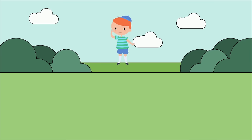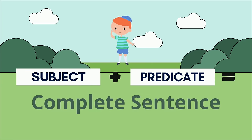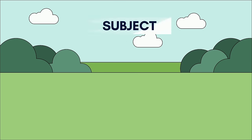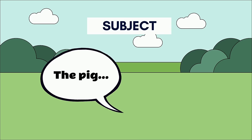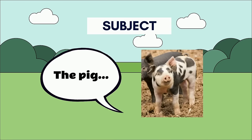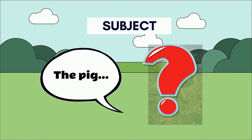Remember, you need both the subject and the predicate to make a complete sentence. If you only have one part, it is not a complete thought. If you have just a subject — for example, the pig — you would have no idea what the pig is or does. Was the pig small and cute? Did the pig jump into the muddy puddle? I don't know. Do you know?